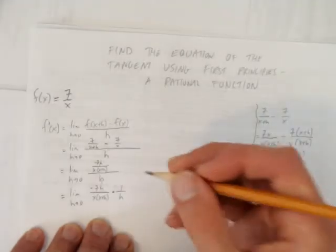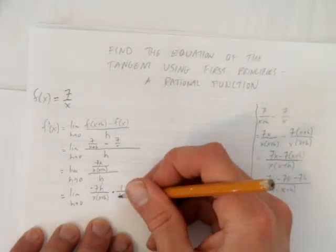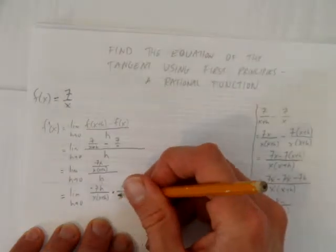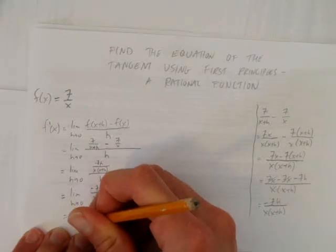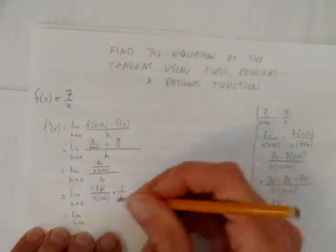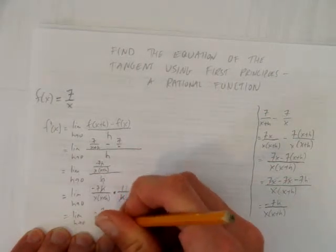That this h here just becomes part of the denominator. And why that's good is because in order to solve, we need to be able to cancel out, which we can do now. We have an h on the bottom, an h on the top, connected by multiplying. We can cancel out. And now we have the limit as h approaches 0 of negative 7 over x times x plus h.